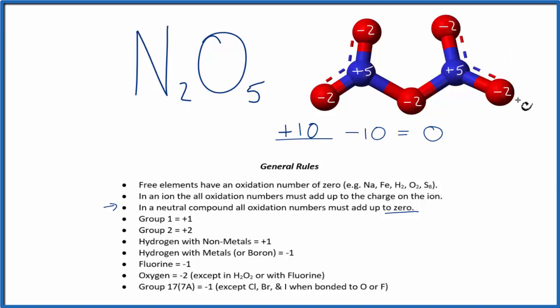So now if I add up all the oxidation numbers, I have 5, 10 for the nitrogens, and 2, 4, 6, 8, 10, minus 10 for the oxygens, that'll give me 0.